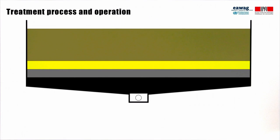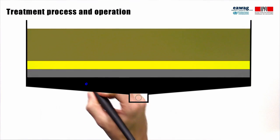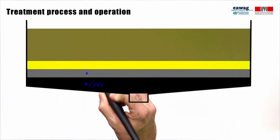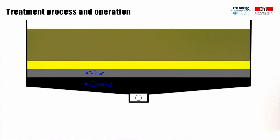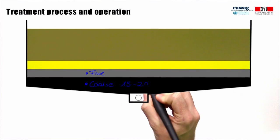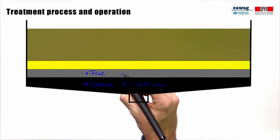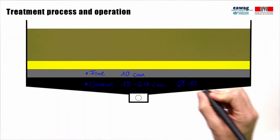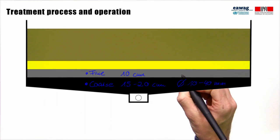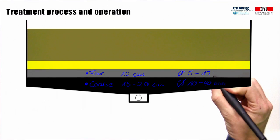This slide shows a cross section of an unplanted drying bed. The filter media typically consists of different layers of gravel and sand in decreasing diameter. The bottom layer is typically made of coarse gravel and fine gravel. Based on designs from Kampala, Dakar, and Accra, the coarse gravel layer typically has a depth of 15 to 20 cm and the fine gravel layer 10 cm. The size of the gravel is commonly 10 to 40 mm for the coarse gravel and 5 to 50 mm for the fine gravel.